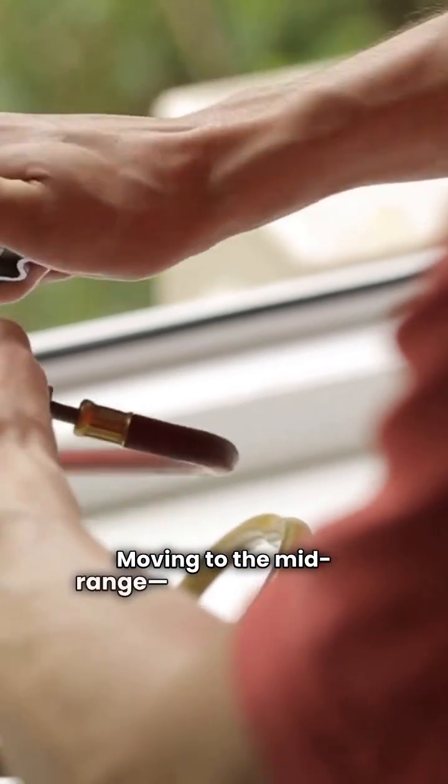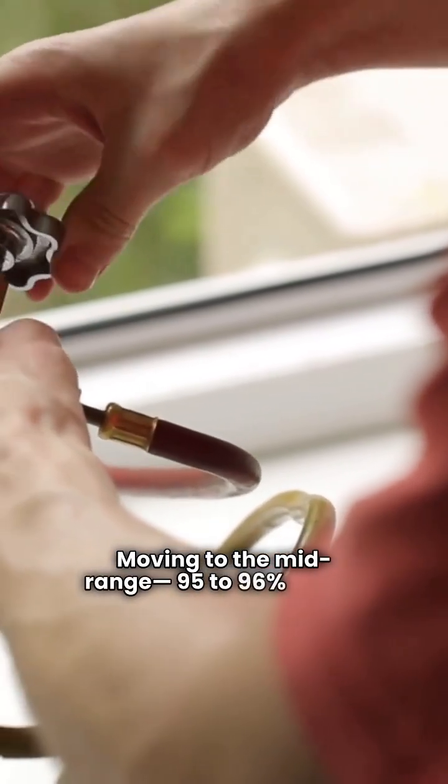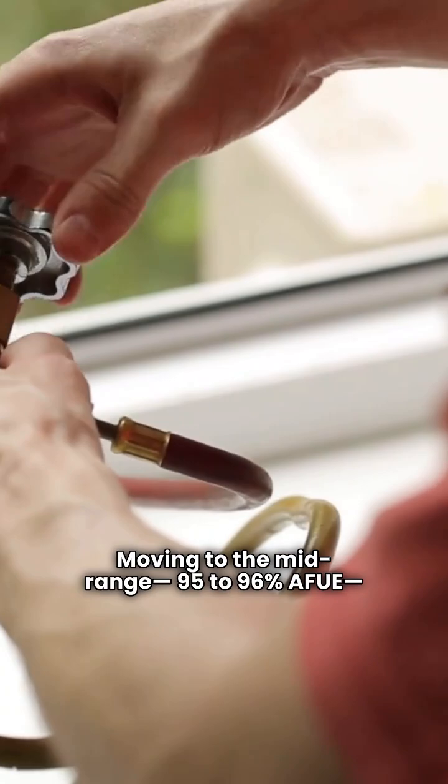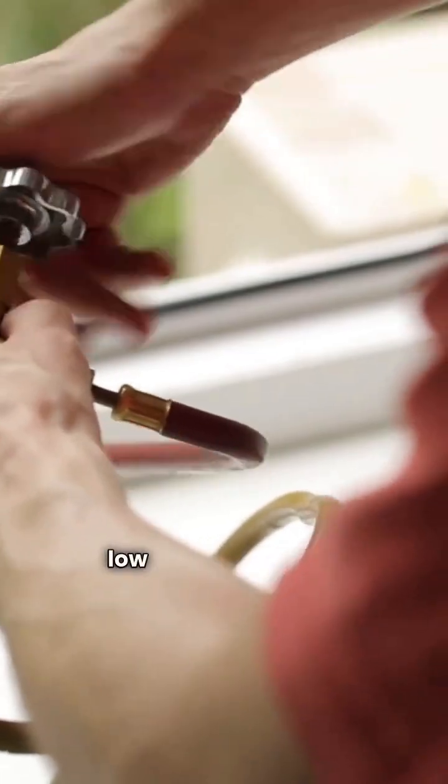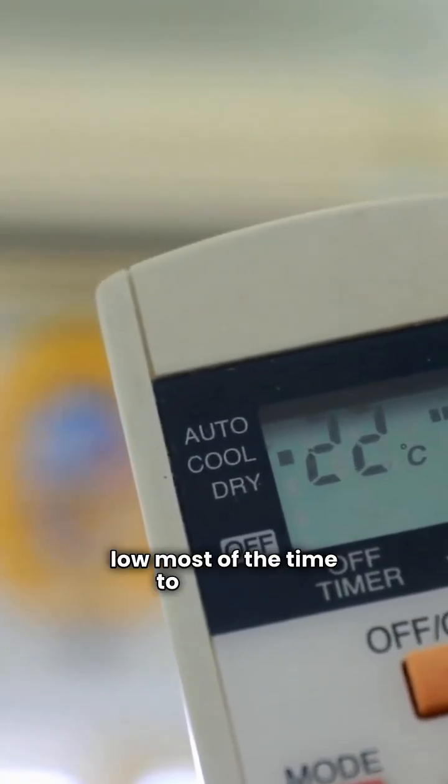Moving to the mid-range, 95-96% AFUE, this is where two-stage models shine, running on low most of the time to save fuel.